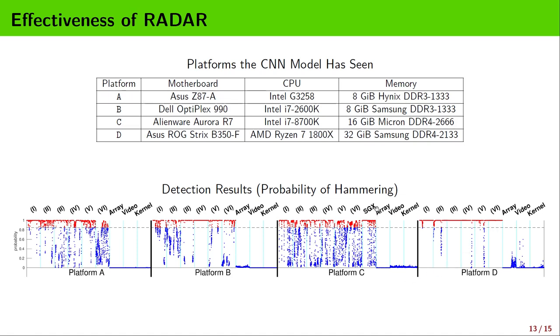Rowhammer attacks may be hidden inside malicious SGX enclaves. By evaluating our RADAR system against such enclaves on platform C, we conclude that it makes no difference to our detection.